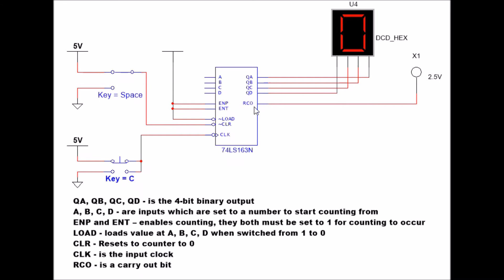RCO, that's a carry out. And if you noticed, if I go all the way up to F, which is a 15, you can see that this light comes on. This is a carry out. You can use this as the input to another one of these chips. If you wanted to count beyond 15 and put another digit in there, you could use it for that purpose.